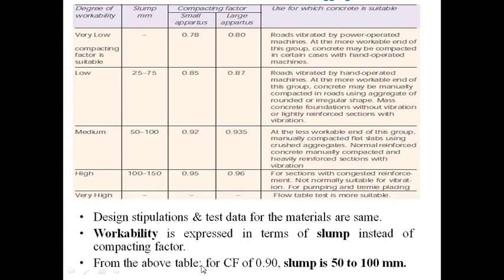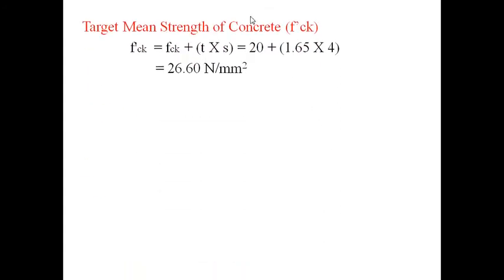From an approximate table, when the compacting factor is around 0.9, the slump of the concrete will be between 50–100 mm. So for the same concrete, a compacting factor of 0.9 corresponds approximately to a slump of 50–100 mm (this is an approximate table). The target mean strength here is also the same as before: 26.6 N/mm².